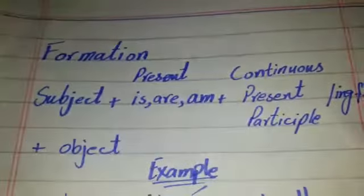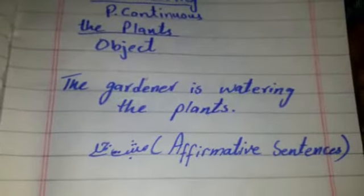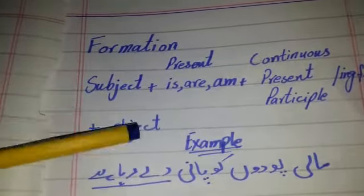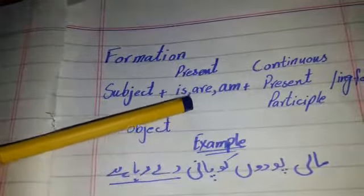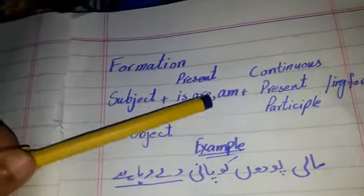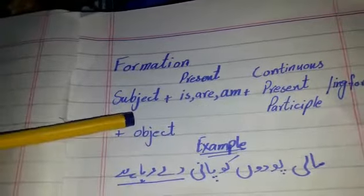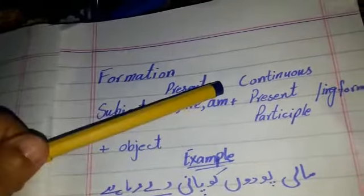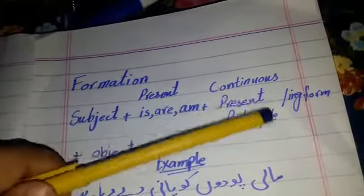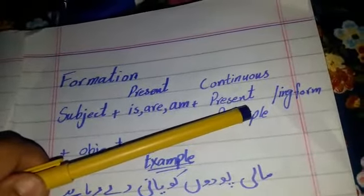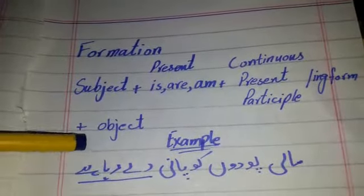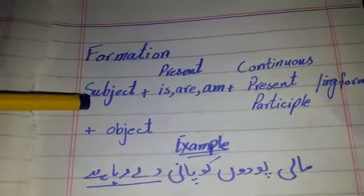Now we recall the formation — that is affirmative sentences. Affirmative means 'musbat jumlah,' we can say 'saada jumlah.' Formation: first of all write the subject. After that, to show present continuous, we use three helping verbs: is, are, or am according to the subject. If the subject is singular, we use 'is.' If the subject is plural, we use 'are.' If the subject is 'I,' we use 'am.' We use is/are/am to indicate present. And to show the action continuously happening, we use the present participle — the ing form, like going, buying, baking. After that, we put the object and then a full stop.